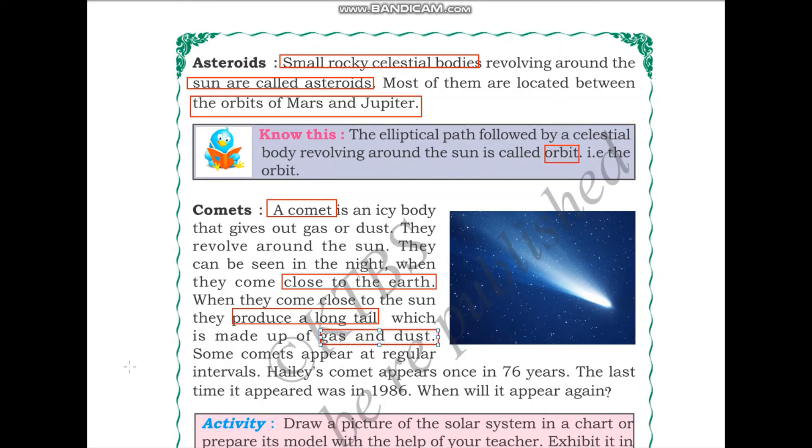Some comets appear at regular intervals. Halley's comet appears once in 76 years. The last Halley comet appeared in 1986. The last Halley's comet appeared in 1986. When will it appear again?